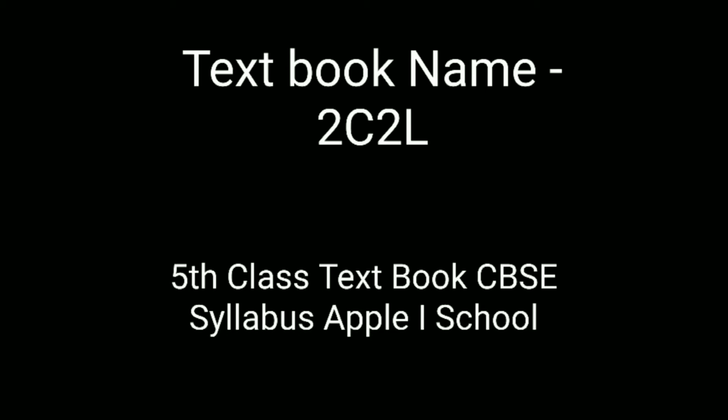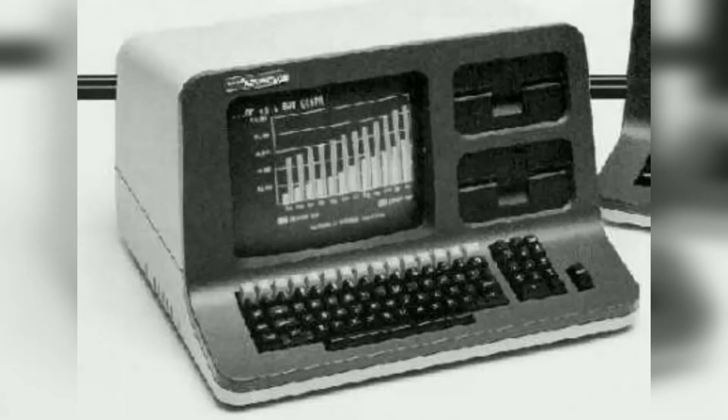For example, COBOL and FORTRAN. The second generation computers are also known as transistor computers. COBOL, the Common Business Oriented Language, is the second oldest high-level programming language. FORTRAN is the oldest. COBOL was developed in the late 1950s and early 1960s.